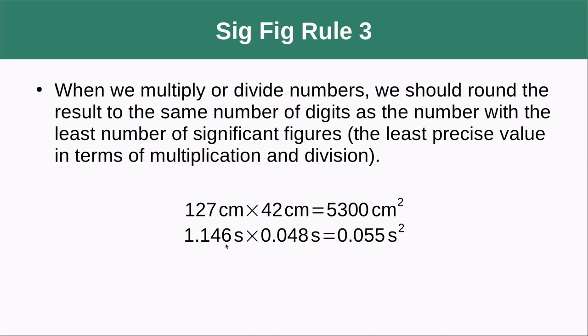Here we have three significant figures. Here we only have two. So we have to round our number to only have two significant figures. Even though we had four here, we only get to use this two. Remember that these leading zeros were not significant because leading zeros are never significant.